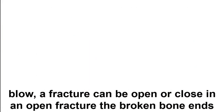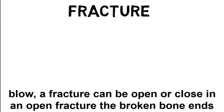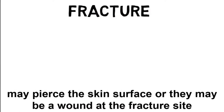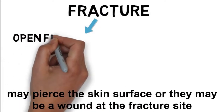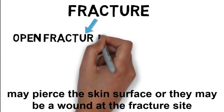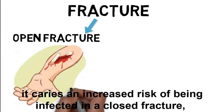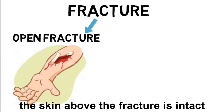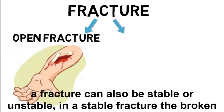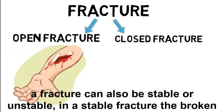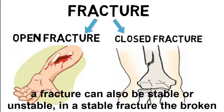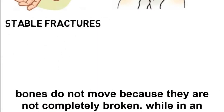A fracture can be open or closed. In an open fracture, the broken bone ends may pierce the skin surface, or there may be a wound at the fracture site, which carries an increased risk of infection. In a closed fracture, the skin above the fracture is intact.